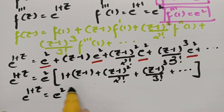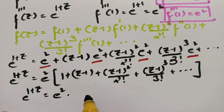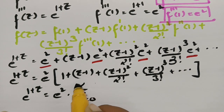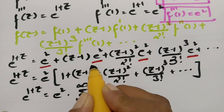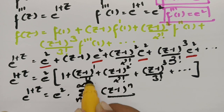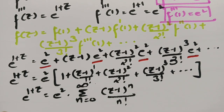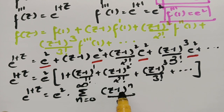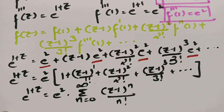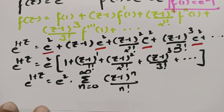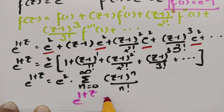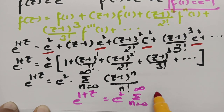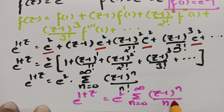This can be written as e power 1 plus z equals e square times sigma n equals 0 to infinity of z minus 1 power n by n factorial. If you keep n equal to 0, you get z minus 1 power 0 by 0 factorial as the first term; n equal to 1 gives the next term; n equal to 2 gives z minus 1 square by 2 factorial, and so on.